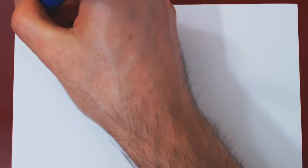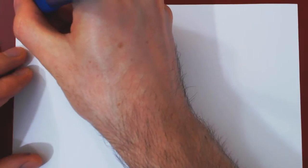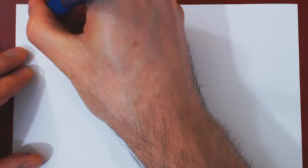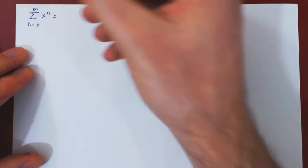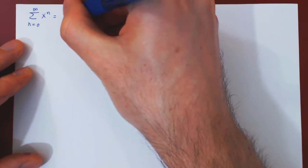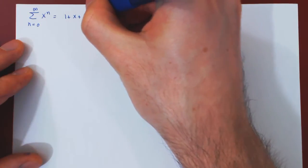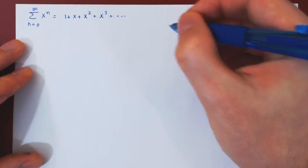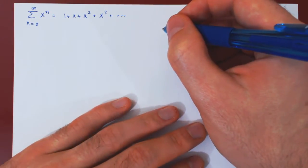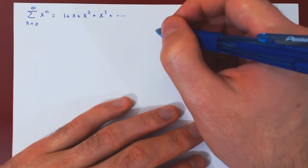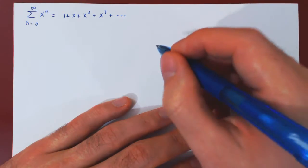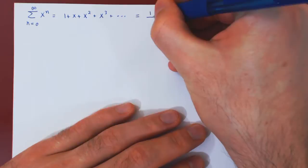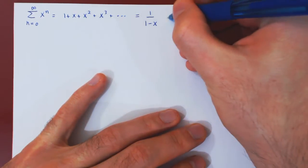Let's recall the following simple power series: summing from 0 to infinity, x to the n. If you expand the terms, you will get 1 plus x, plus x squared, plus x cubed, and so forth. This power series converges only when x lies strictly between negative 1 and 1, and it converges to the simple rational function 1 over 1 minus x.